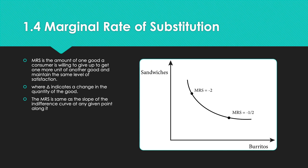Section 1.4 covers the marginal rate of substitution, or MRS, which is a huge topic in all of economics. The MRS is the amount of one good a consumer is willing to give up to get one more unit of another good while maintaining the same level of satisfaction. It deals with delta A and delta B, where the delta sign indicates a change in the quantity of the good.